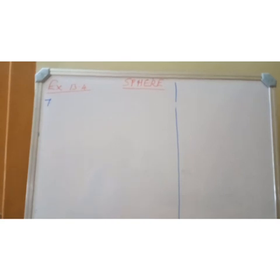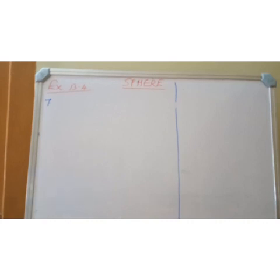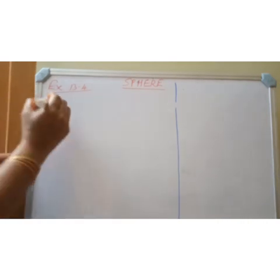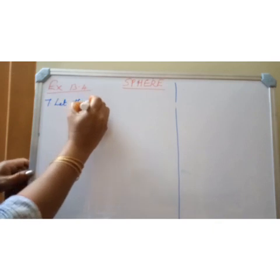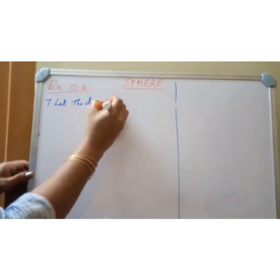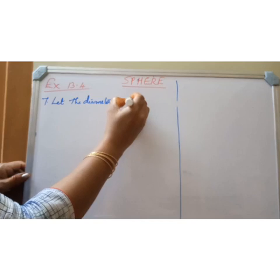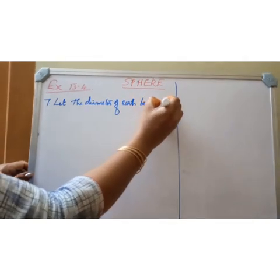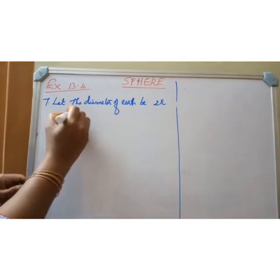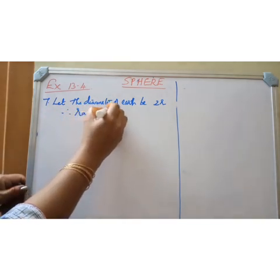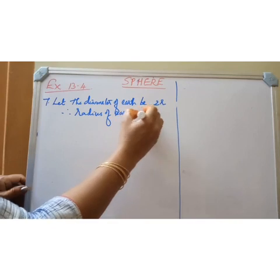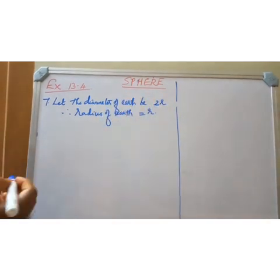The diameter of the moon is approximately one-fourth of the diameter of the earth. Find the ratio of the surface areas. First, let us consider the diameter of the earth to be 2R. Therefore, the radius of the earth is R, since 2R divided by 2 equals R.